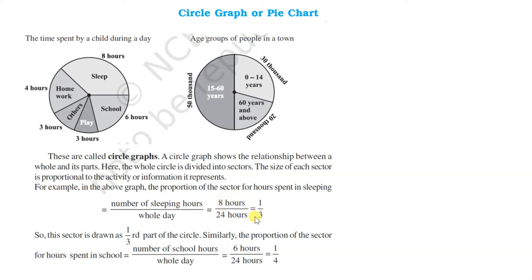It is 1 by 3 of the fraction, means it is 1 third of the part of the circle. Similarly, the number of hours spent in school, it is 6 hours. In fraction you can have 6 by 24 hours, that is 1 by 4. It means it is showing 1 fourth of the whole.